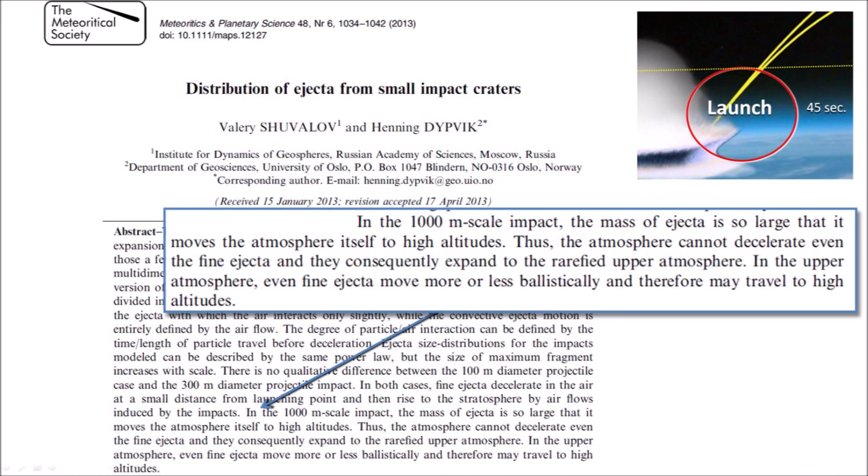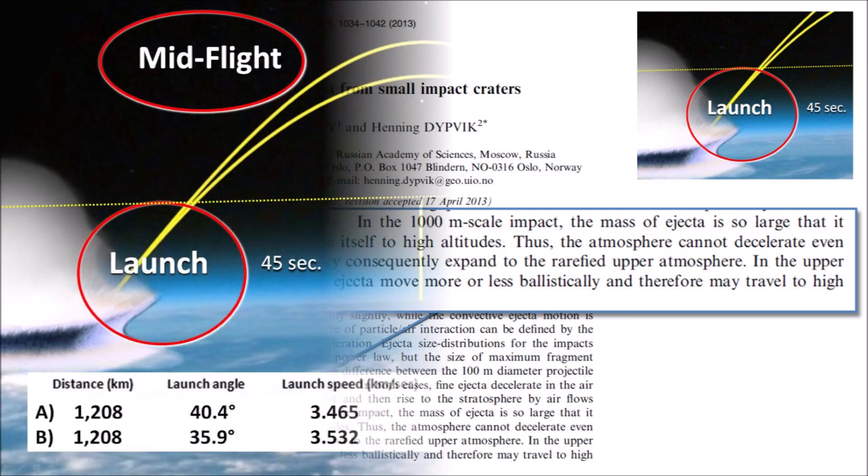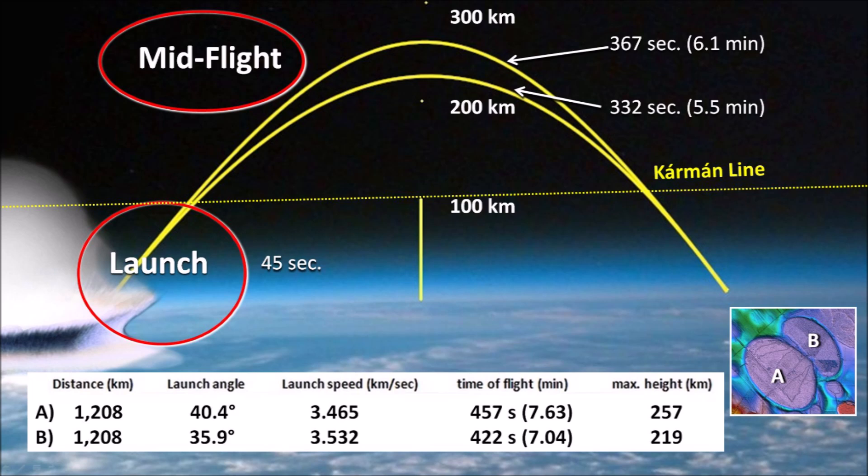In previous videos I have pointed out that a numerical model by Shuvalov and Dipik shows that large extraterrestrial impacts launch the mass of ejecta and lift the area itself to high altitudes, where even the fine particles move more or less ballistically in the rarefied upper atmosphere. The movement of the atmosphere along with the ice ejecta means that the ice boulders would not encounter aerodynamic resistance during the launch stage — they are carried along with the mass of air being lifted by the exploding projectile. The ballistic trajectories would be suborbital space flights in the vacuum of space with no atmospheric friction.